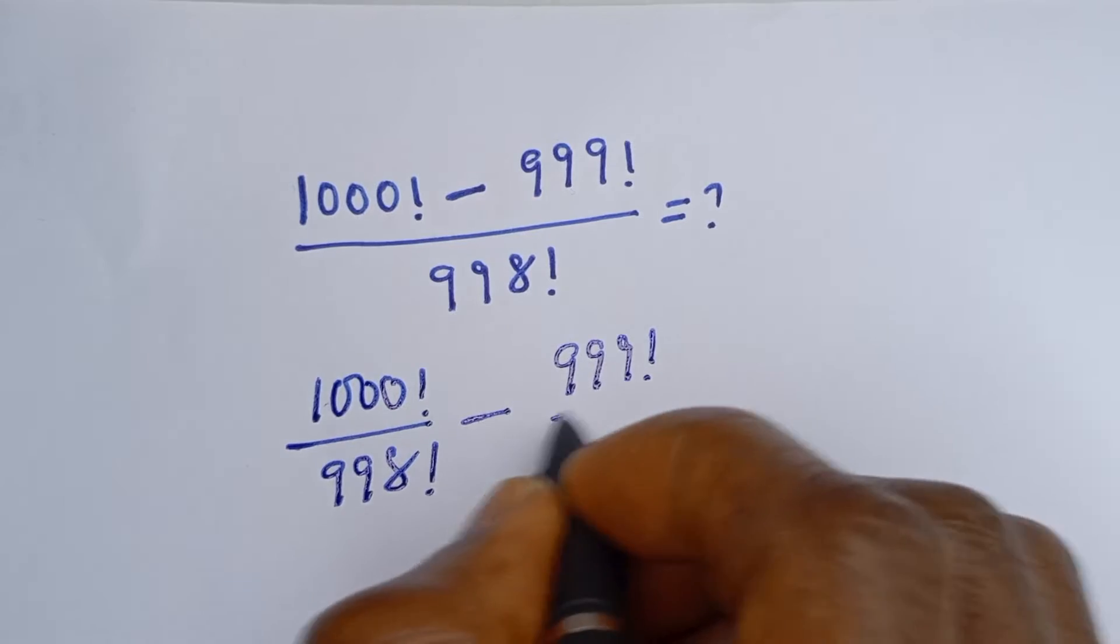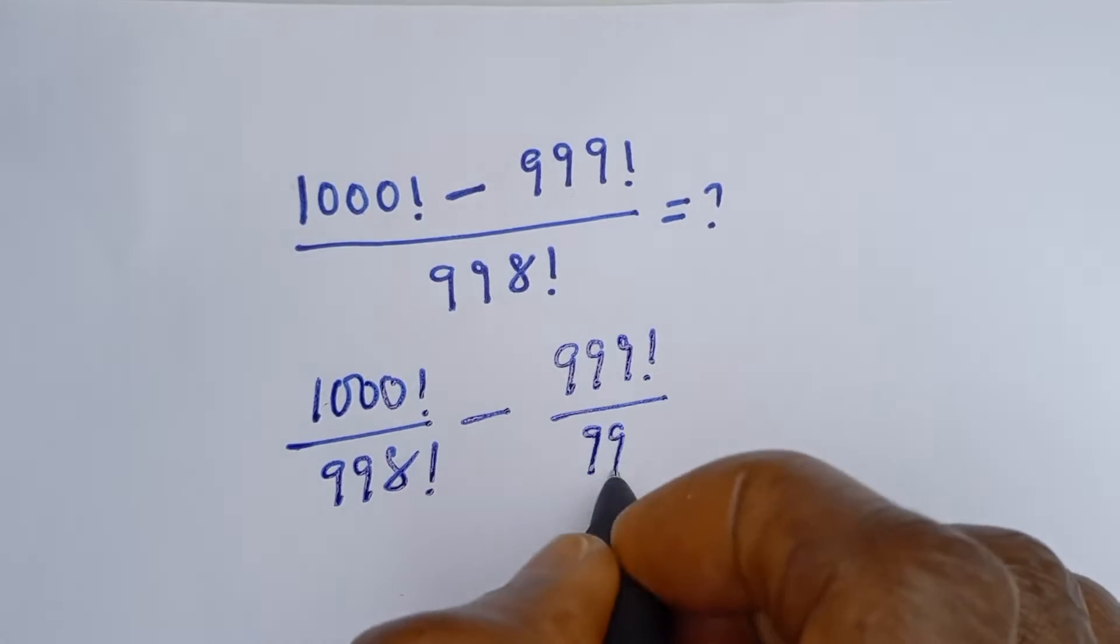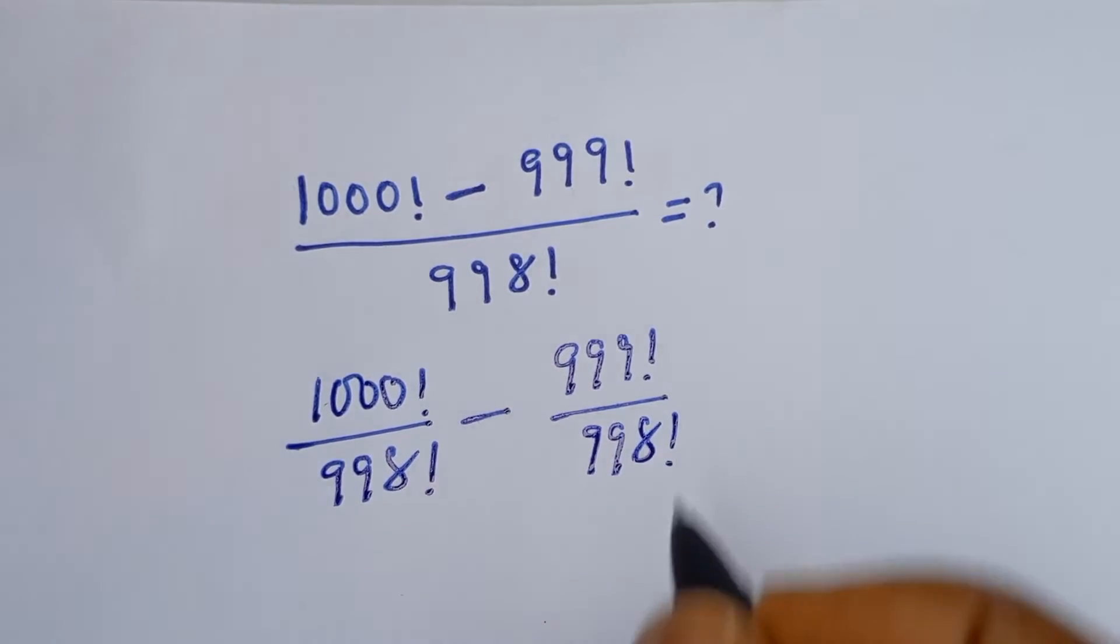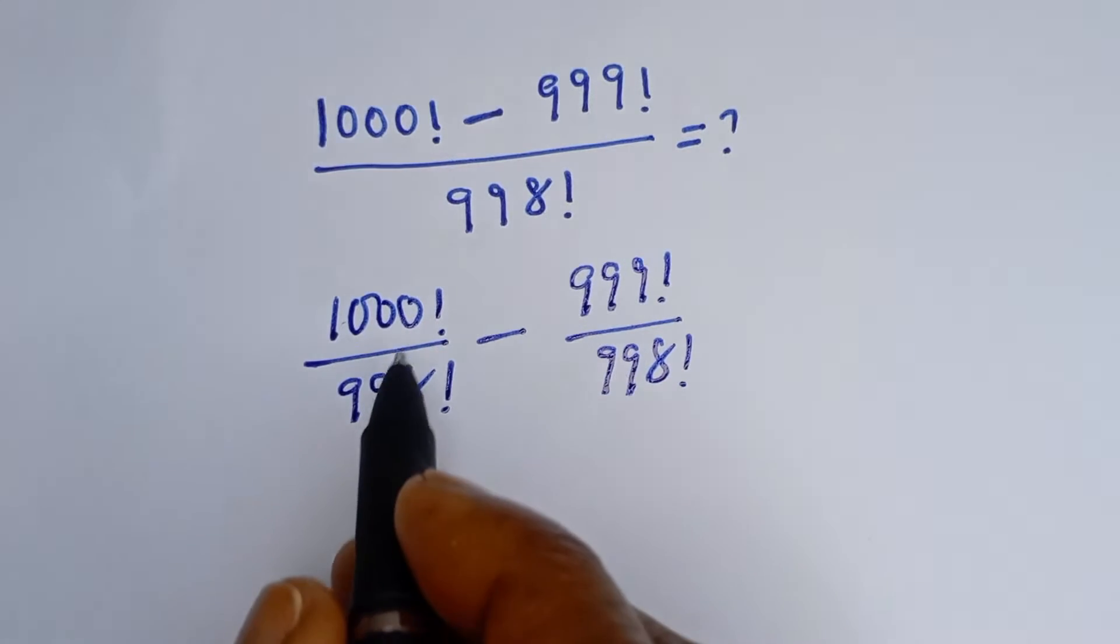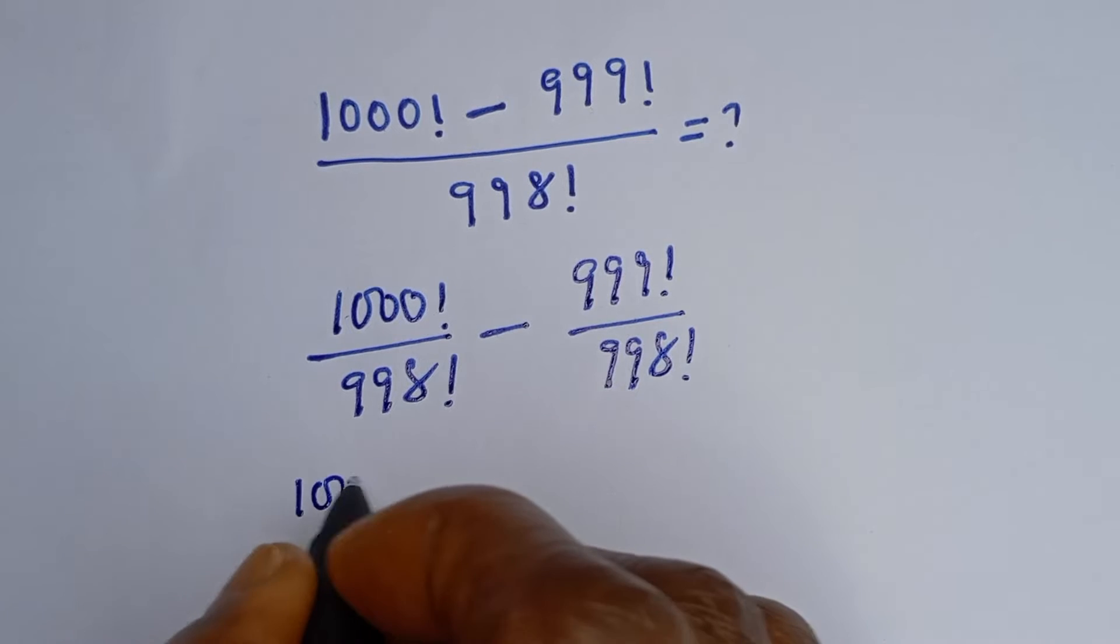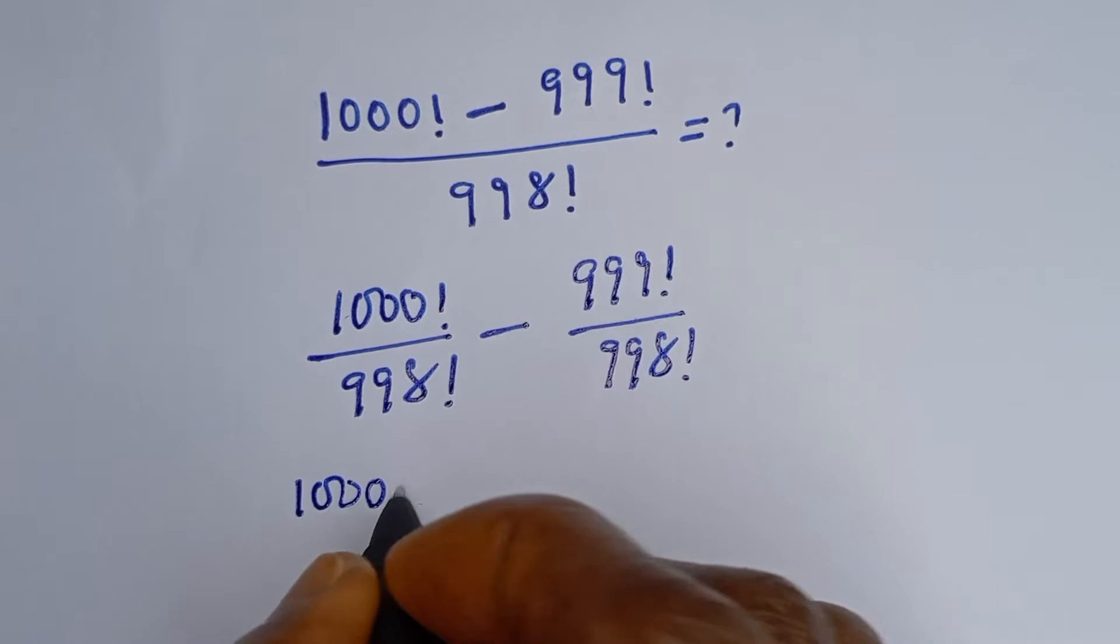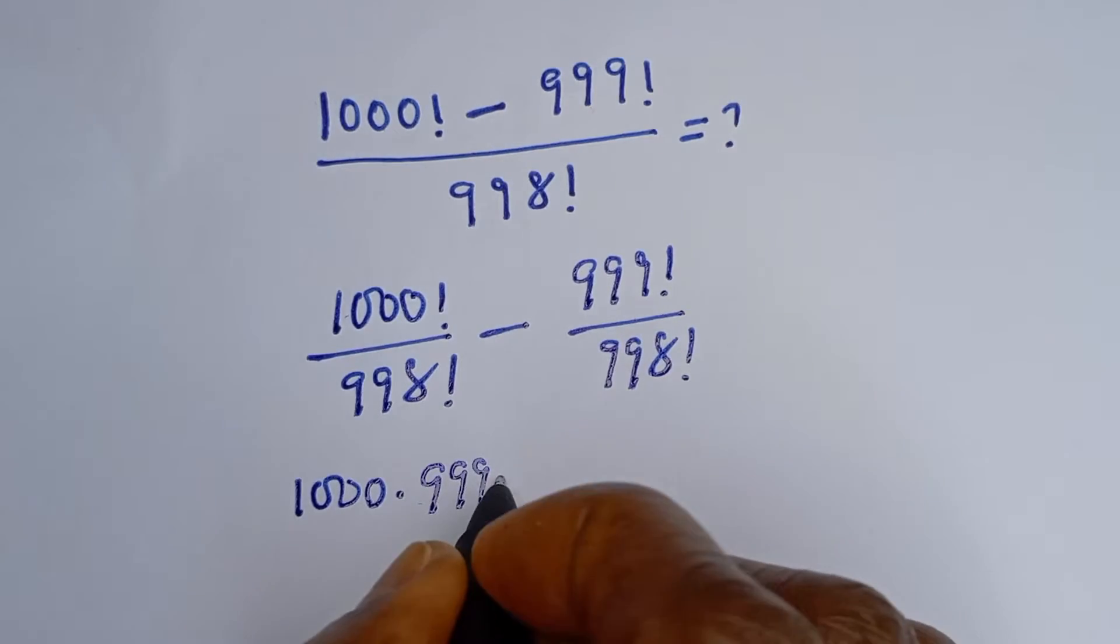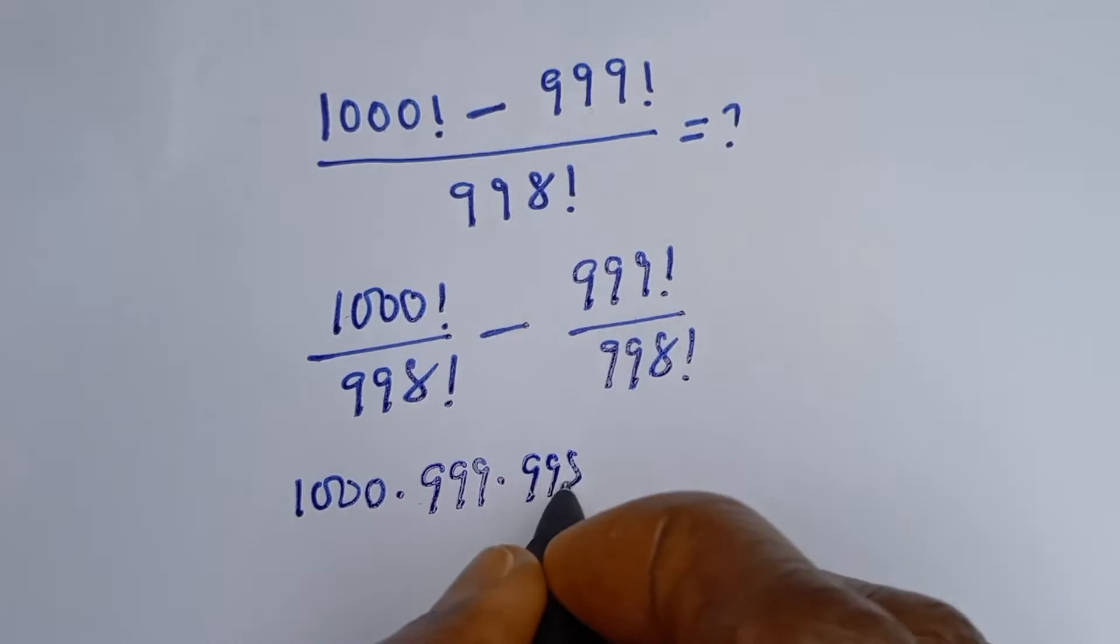Then this 1000 factorial can be written as 1000 multiplied by 999 multiplied by 998 factorial divided by 998 factorial.